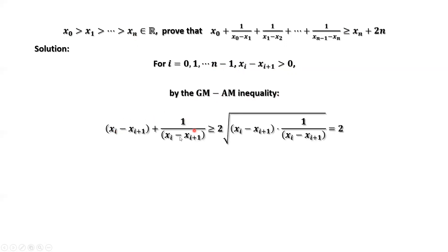The sum of the two terms equals 2 times the square root of the product of the two terms. The inside part xi minus xi plus 1 cancels out from both numerator and denominator. Therefore, this part equals 2.